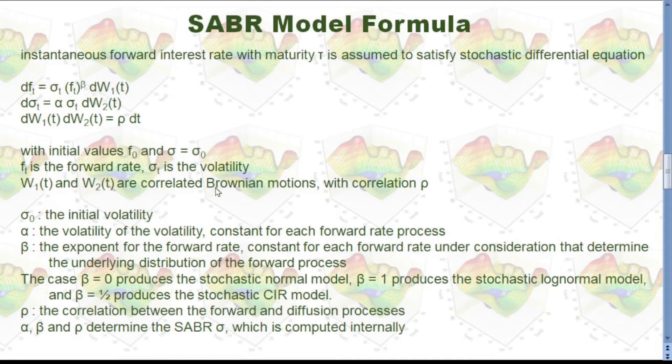The forward rate change is associated with W1, one of the Brownian motions. This sigma is associated with W2, another Brownian motion. The correlation between those two Brownian motions is this correlation rho.